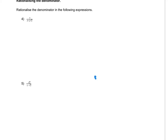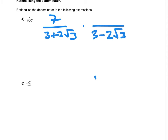Now we're going to look at something slightly more complicated: rationalizing the denominator. We have 7 over 3 plus 2 root 3. This isn't as simple as multiplying by root 3, because if I just multiply by root 3 on the bottom I get 3 root 3 plus 6 — I'd still have a radical on the bottom. What we have to do is multiply by the conjugate. For a binomial like 3 plus 2 root 3, we multiply the top and bottom by the conjugate of the bottom, which is 3 minus 2 root 3 — the same expression but with the sign in the middle changed.